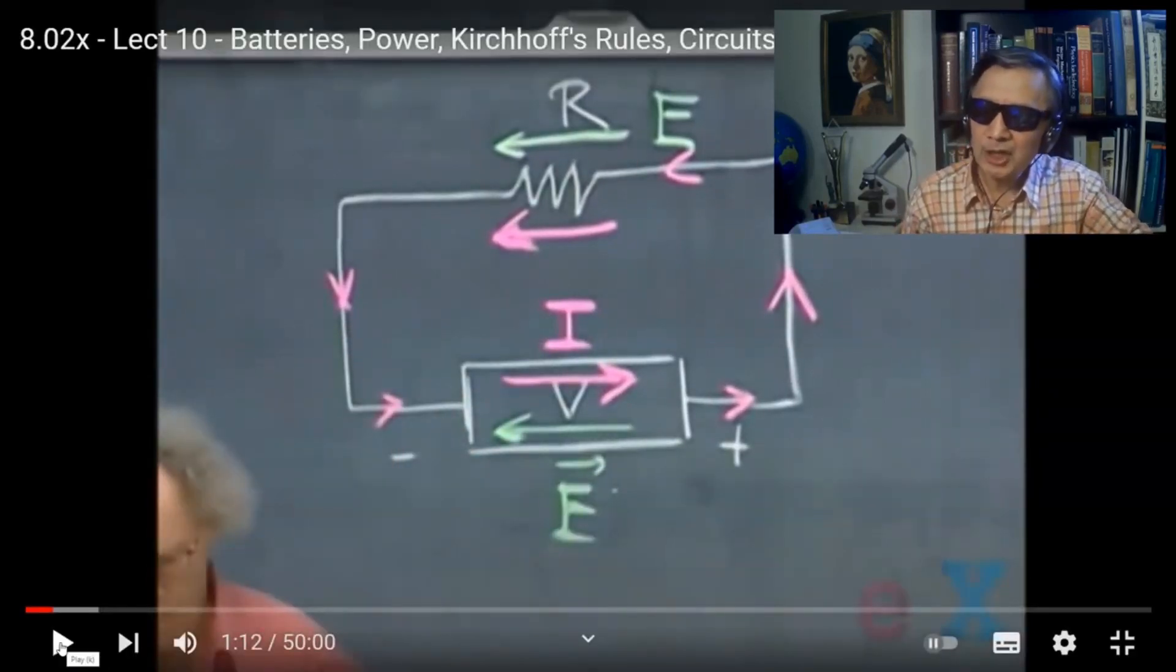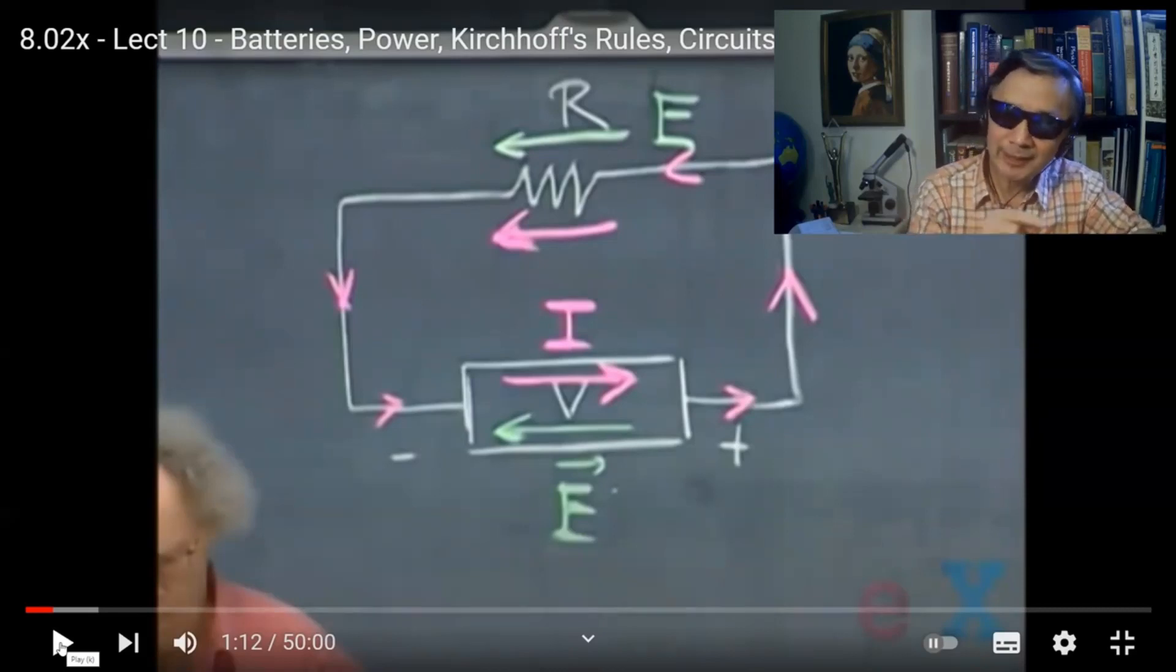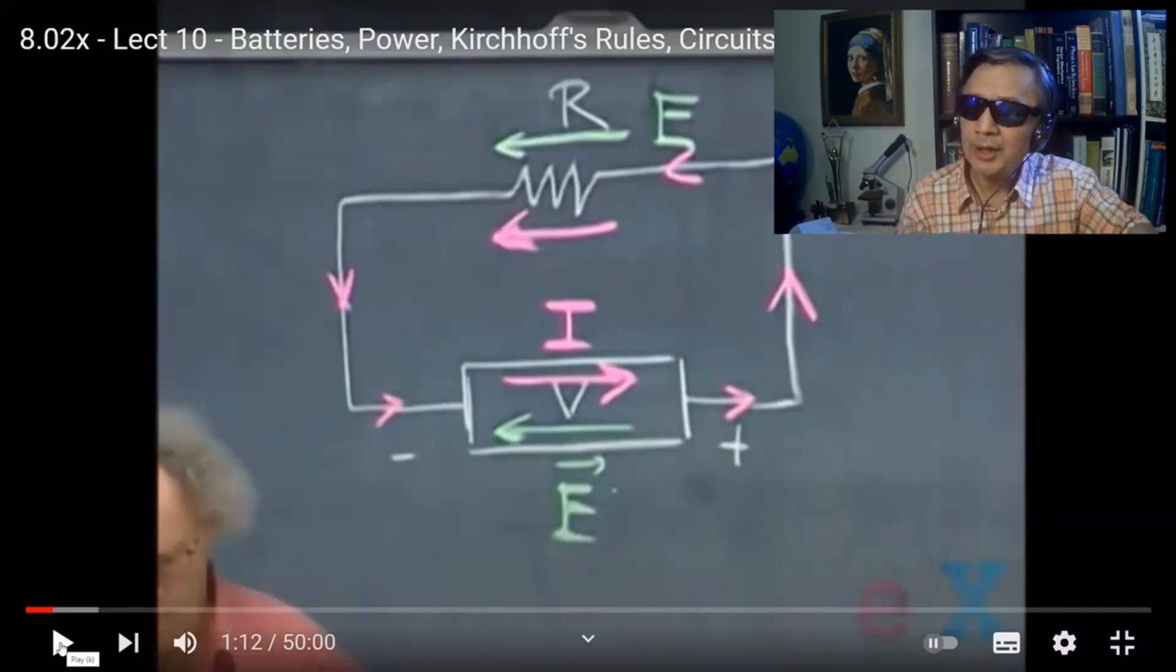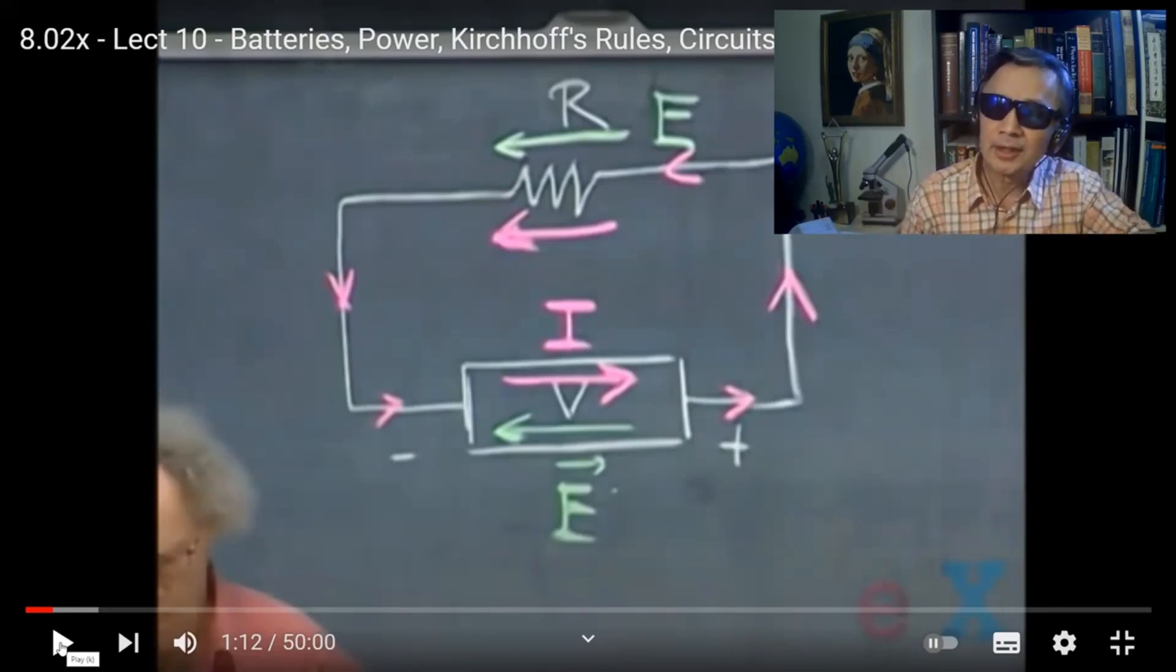First of all, he assumes there's internal current running from the negative side to the positive side. However, he also noticed that the electrical field is actually against this internal current he defined.